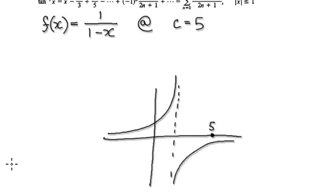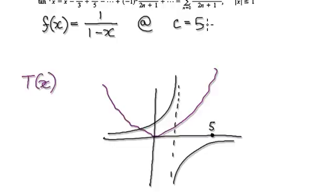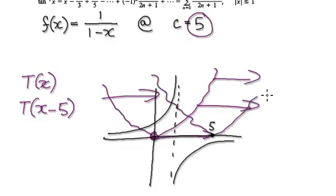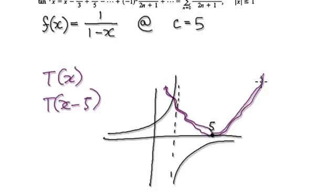To do this, try and visualize this in your mind. It will look something like this. We start out with our general power series, and then because it's centered at 5, we apply this transformation — we shift everything across by 5. So it would look something like this, centered at 5. You start out with your general power series, apply this transformation, and now it looks like this.